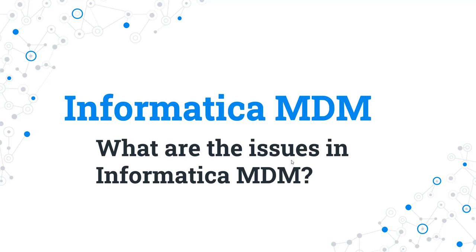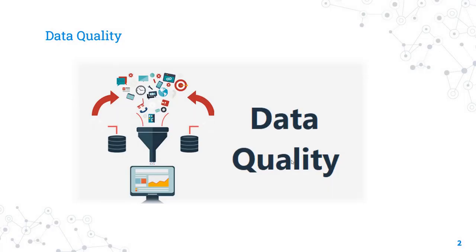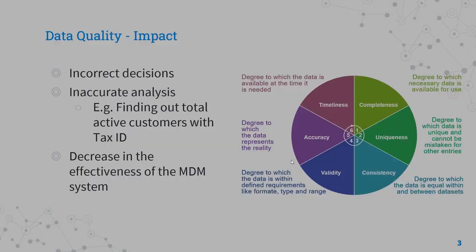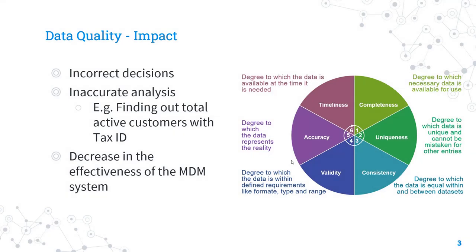The very first issue is related to data quality. I would recommend mentioning data quality as the first issue because that's where the actual MDM implementation starts — the organization faces data issues and that's the reason they go for mastering the data. Data quality is an essential aspect of any master data management project. Poor data quality can lead to incorrect decisions, inaccurate analysis, and an overall decrease in the effectiveness of the MDM system.